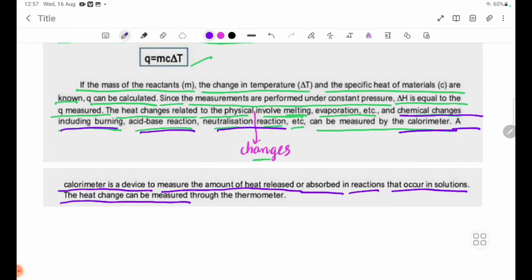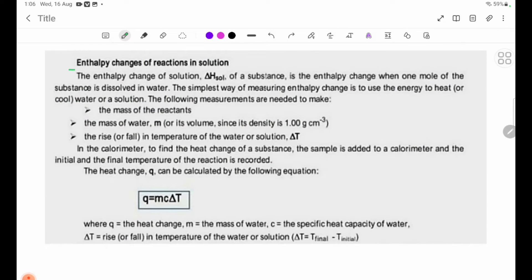A calorimeter is a device to measure the amount of heat released or absorbed in reactions that occur in solutions. The heat of solution, delta H sol of a substance, is the heat change when one mole of the substance is dissolved in water.